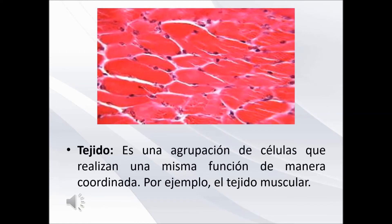El segundo nivel de organización corresponde a los tejidos, que son un conjunto de células del mismo tipo que realizan una función específica. Por ejemplo, el tejido muscular permite efectuar movimientos. El tejido nervioso forma los nervios y transmite los impulsos nerviosos a lo largo del cuerpo. El tejido epitelial, como la piel, protege y recubre el cuerpo.